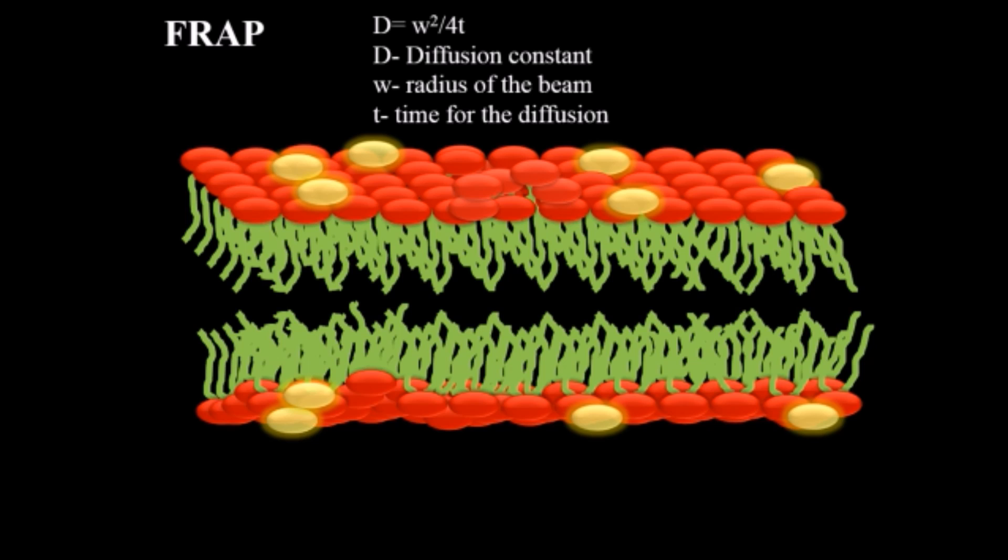In simple formula, D = w²/4t. The diffusion constant, D. W is representing the radius of the beam intensity which we have exposed for plasma membrane to bleach. And lastly, t represents time. How much time it has been diffused or how much time it has been total recovery.